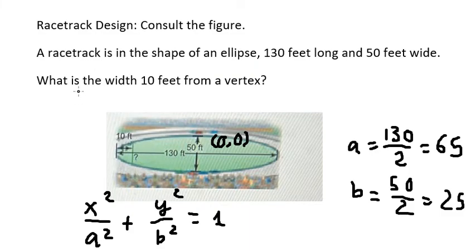The question is: what is the width 10 feet from a vertex? So we know that the point of the vertex is at (-65, 0).